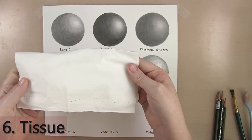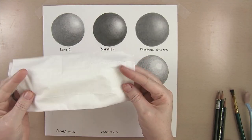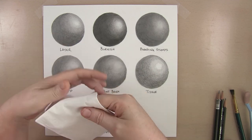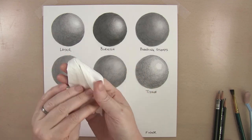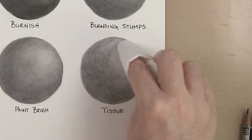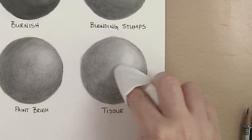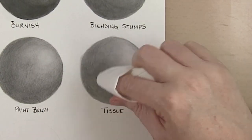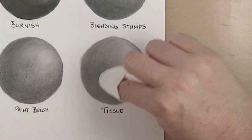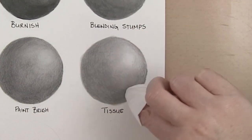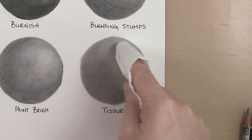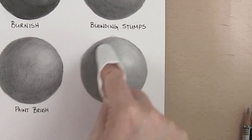The next method is number six using a tissue. When using a tissue you want to make sure it is smooth and doesn't have any texture to it. You also want to make sure it is plain tissue and not infused with aloe or lotion. I wrap the tissue around my finger and work in circular motions blending out the graphite. This is a great technique for skin and any other subject that needs the smoothest of blends.